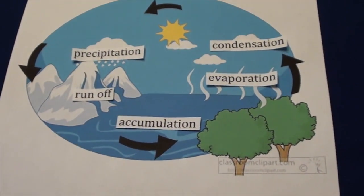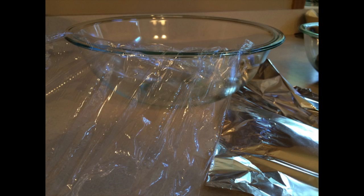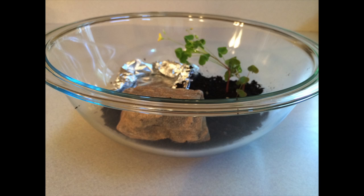Now that you know how the cycle works, let's create our own mini cycle — you can create one at home. All you need is a clear bowl or container, cling wrap, aluminum foil, and water. I also added soil, a plant, and a rock to make it more realistic.